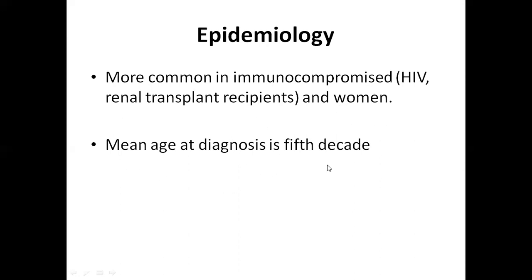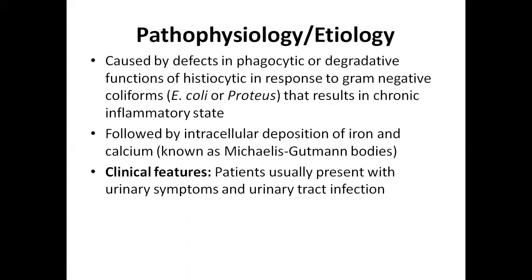The mean age of diagnosis is the fifth decade. In terms of pathophysiology, when there are recurrent infections with gram-negative bacteria, especially E. coli or Proteus, there is a defect in the phagocytic system of the histiocytes. When the bacteria are engulfed by the histiocytes, they remain in their cytoplasm due to a defect in the degradative system. They ultimately become calcified, and when calcified, they are known as Michaelis-Gutmann bodies, named after the doctors who initially described these lesions.